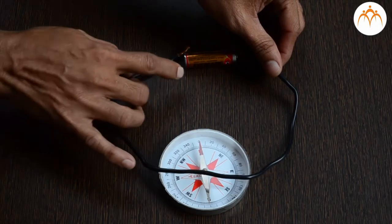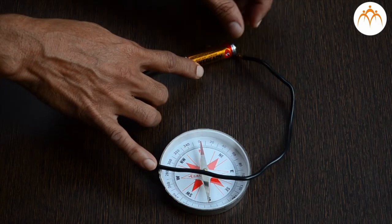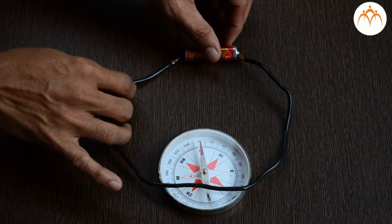Let me pass current through this wire by using this AA battery. I will keep this wire near the compass and connect both ends of the wire to each terminal of the battery.